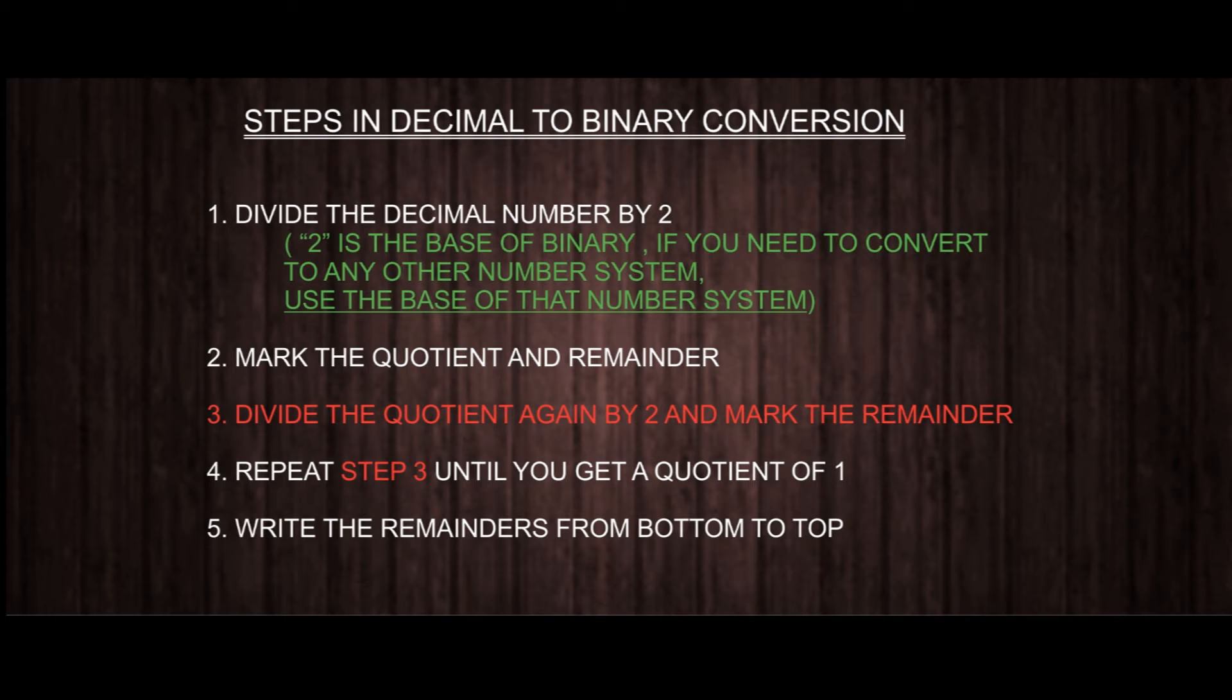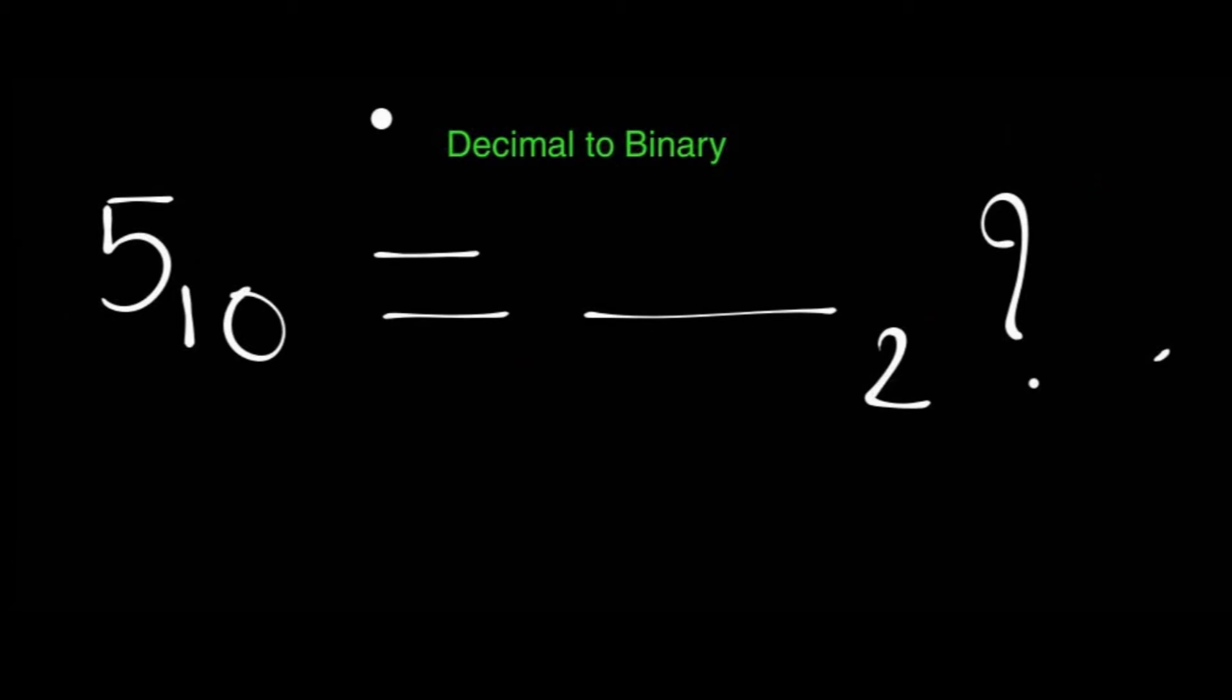If you cannot follow the explanation, don't worry. We can do one example, then the procedure will be clear. I have taken an example here. I am converting 5 to a binary number. I have given 10 as the subscript of 5, which means 5 is a decimal number, or a base 10 number. It is just a notation. Even if you haven't written a subscript, 5 is always taken as a decimal number.